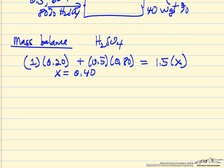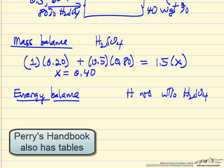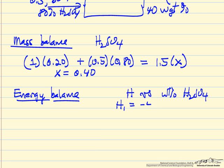Now in order to determine how much heat is added or removed, we have to do an energy balance, and we have to have data. So I'm going to use an enthalpy versus weight percent sulfuric acid diagram from Smith and Vaness. And I'm going to read off the enthalpy for 20% solution, minus 40 BTUs per pound. And then H2, the 80%, so minus 118 BTUs per pound.